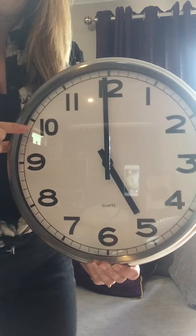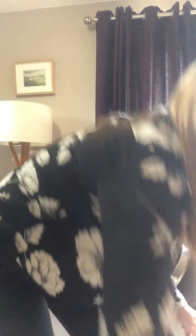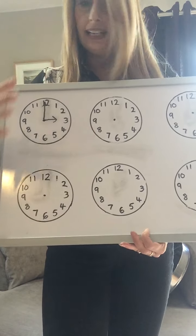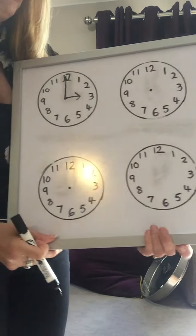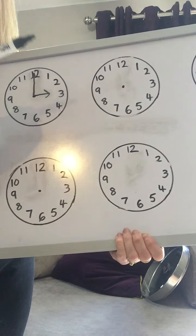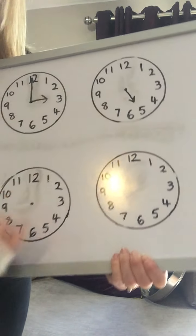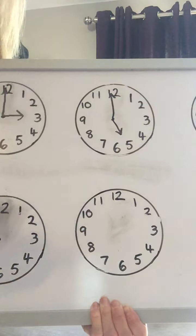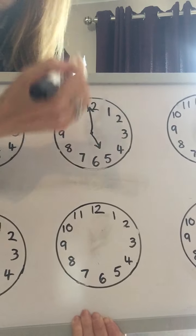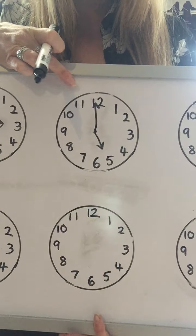Well done! So what I want you to try to do now is draw 5 o'clock on one of your clocks that you have drawn. You can pause this at any time if you need a little bit longer. Remember, for 5 o'clock the hour hand - the shorter hand - is pointing towards the 5. And then the minute hand is always pointing to the number 12, always pointing upwards because 0 minutes have gone past. So that is 5 o'clock.